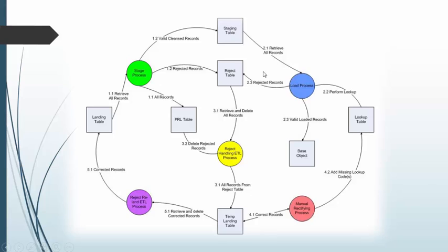During the load process, records are pulled from the staging table and the lookups are applied. For example, in a parent-child relationship, we make sure the parent is present first before inserting the child. If a PK source lookup is configured, that lookup will be applied as well. If the lookup fails, the records are rejected and the reject table is populated. Only valid records are inserted into the base object.